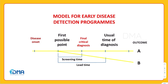As you can see, a disease timeline has been established here. First there is disease onset, then comes the first possible point of detection of a disease, then the final critical point of diagnosis, then the usual time of diagnosis — that is when patients come up with symptoms and visit the doctor — and finally the final outcome A.